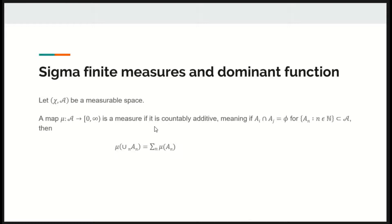The map mu from A to positive reals is a measure if it is countably additive, meaning if A_n are disjoint subsets belonging to A, then measure of union of subsets is equal to sum of measures.